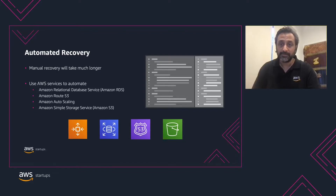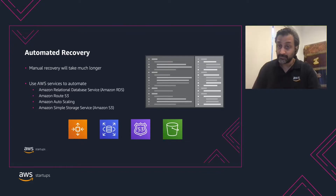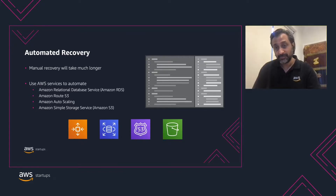By monitoring your workload for key performance indicators that are a measure of business value, you can trigger automation when a threshold is breached. This allows for automatic notification and tracking of failures, and for automated recovery processes that work around or repair the failure.